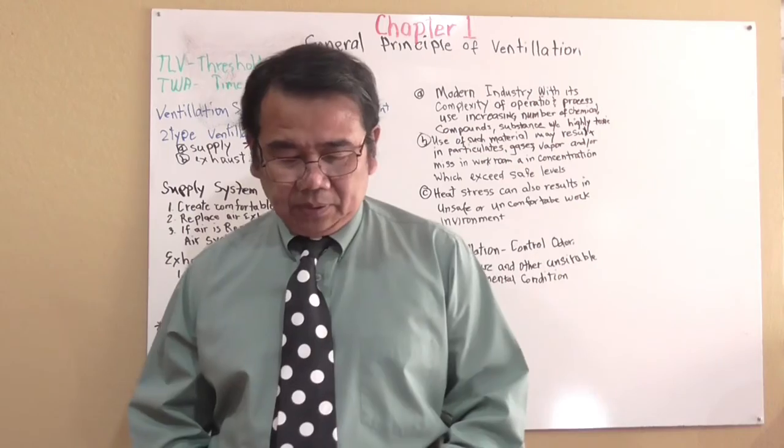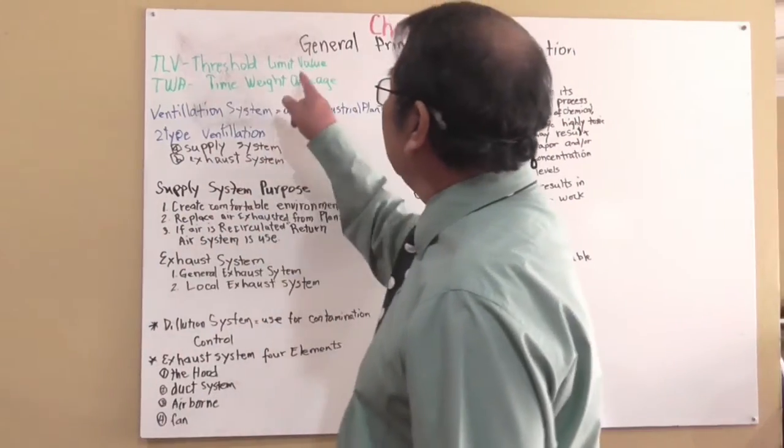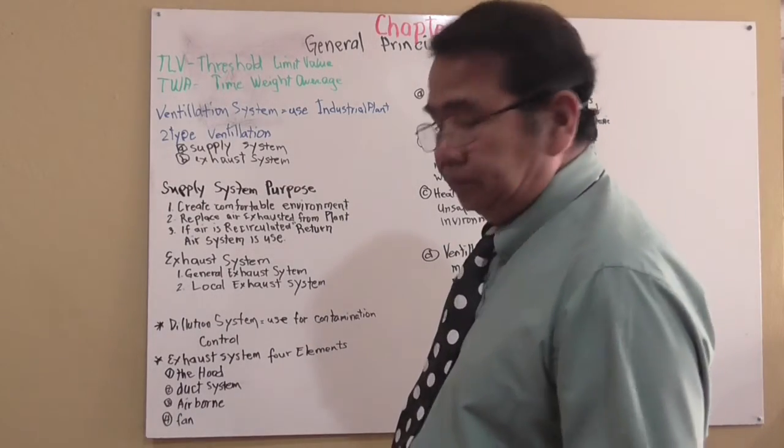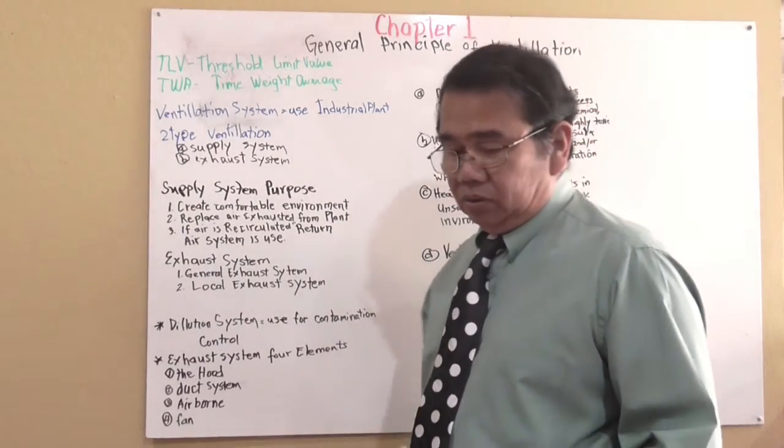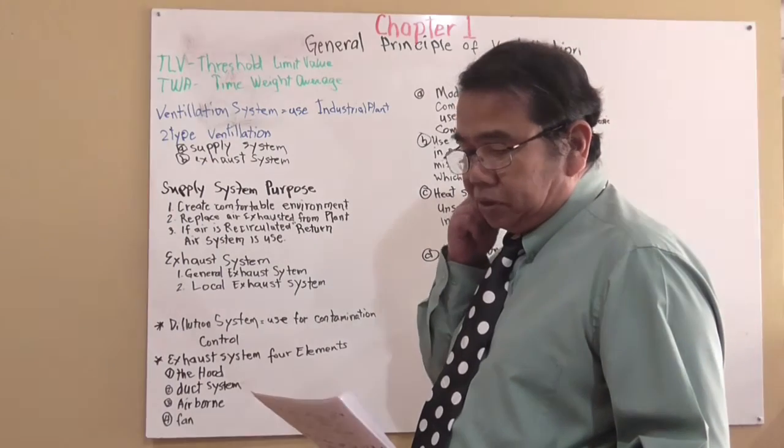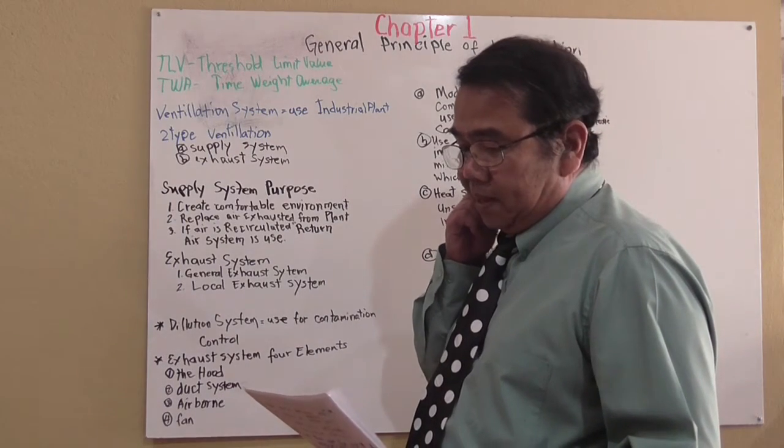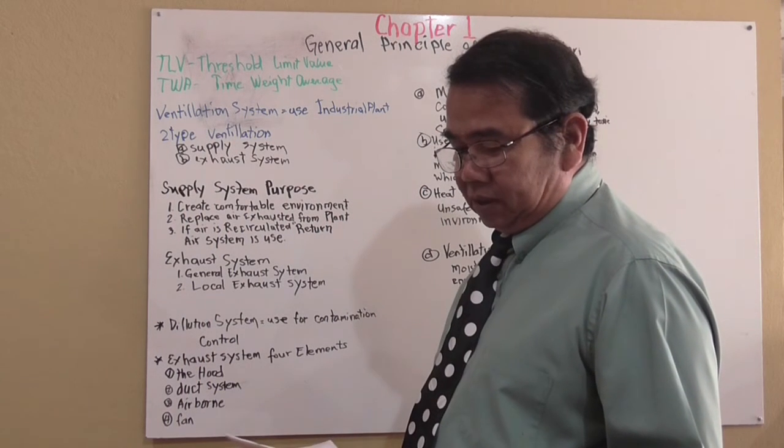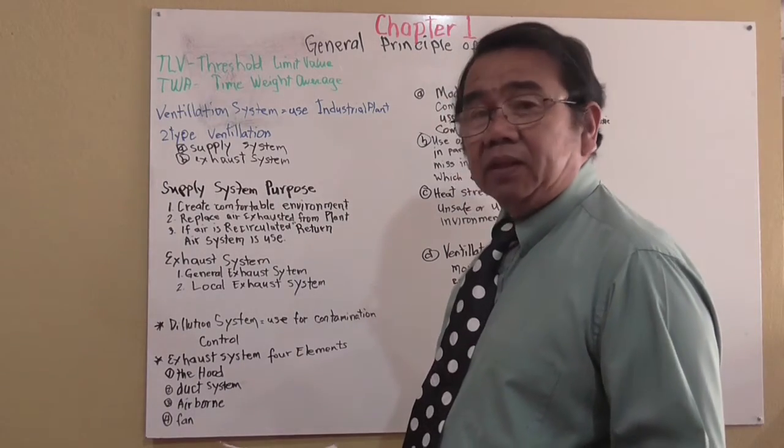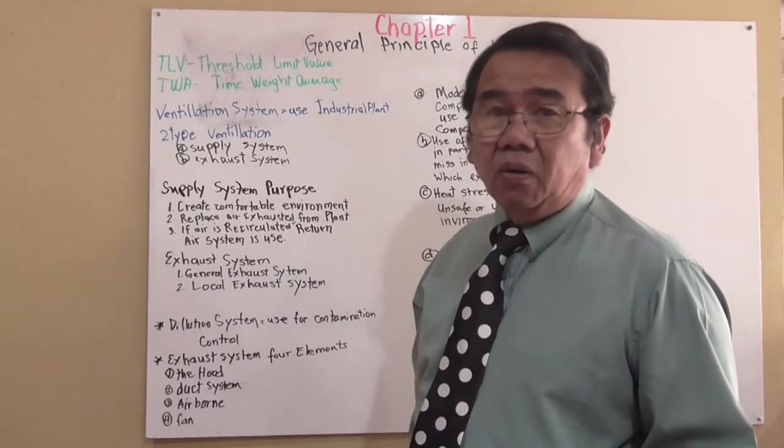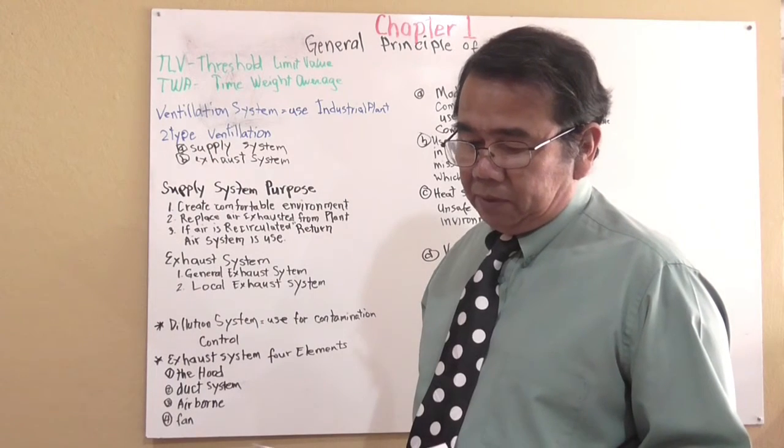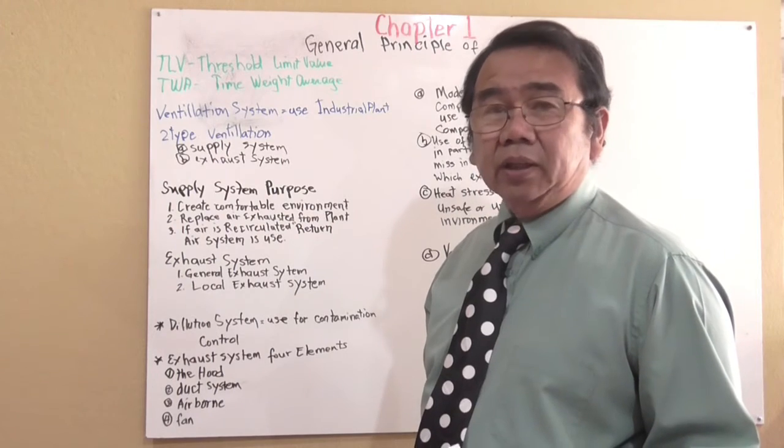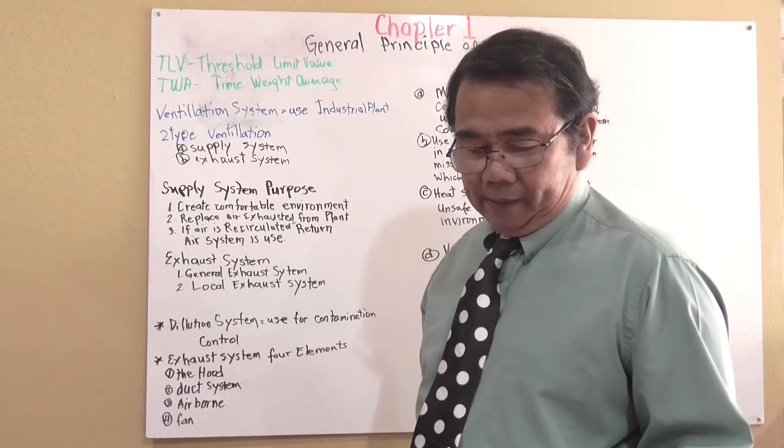Now we're going to talk about TLV, threshold limit value. The TLV is defined as the airborne concentration of a substance which it is believed that nearly all workers may be exposed to day after day without developing adverse health effects.